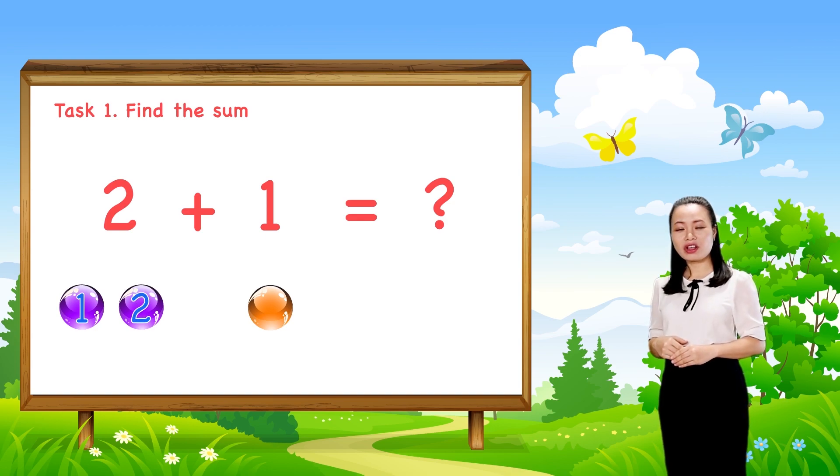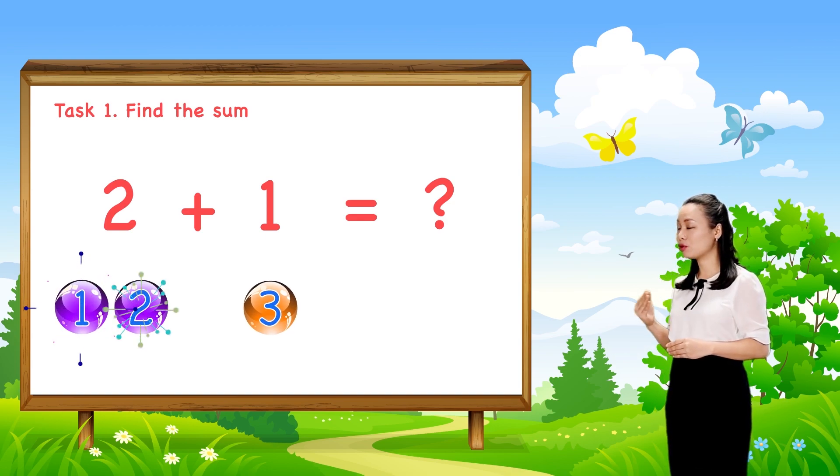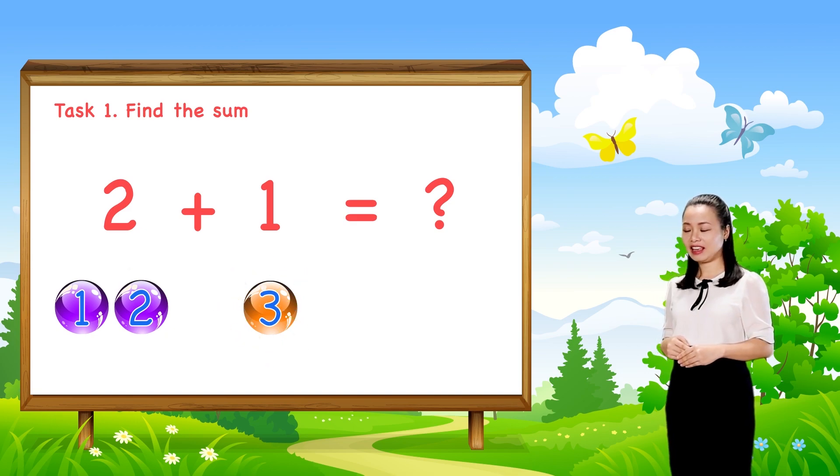1, 2, 3. So, 3 marbles in total. Therefore, 2 plus 1 equals 3.